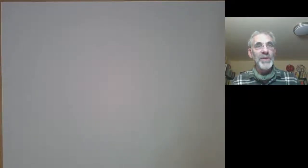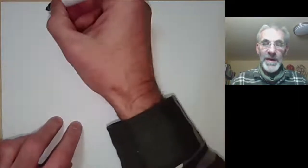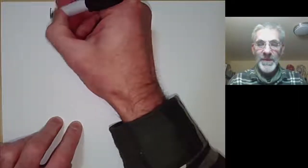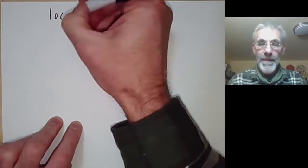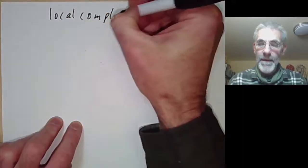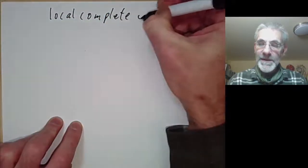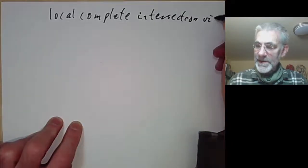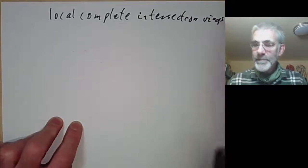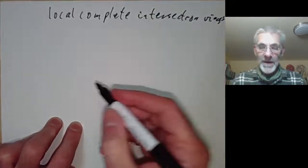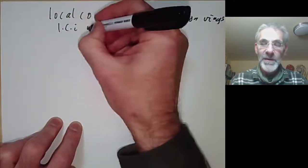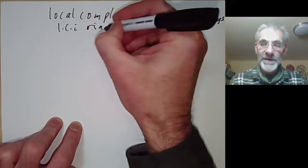This lecture is part of an online commutative algebra course and will be about a class of rings with the rather cumbersome name of Local Complete Intersection Rings. As this is a bit of a mouthful to pronounce, they're often called LCI rings for short.